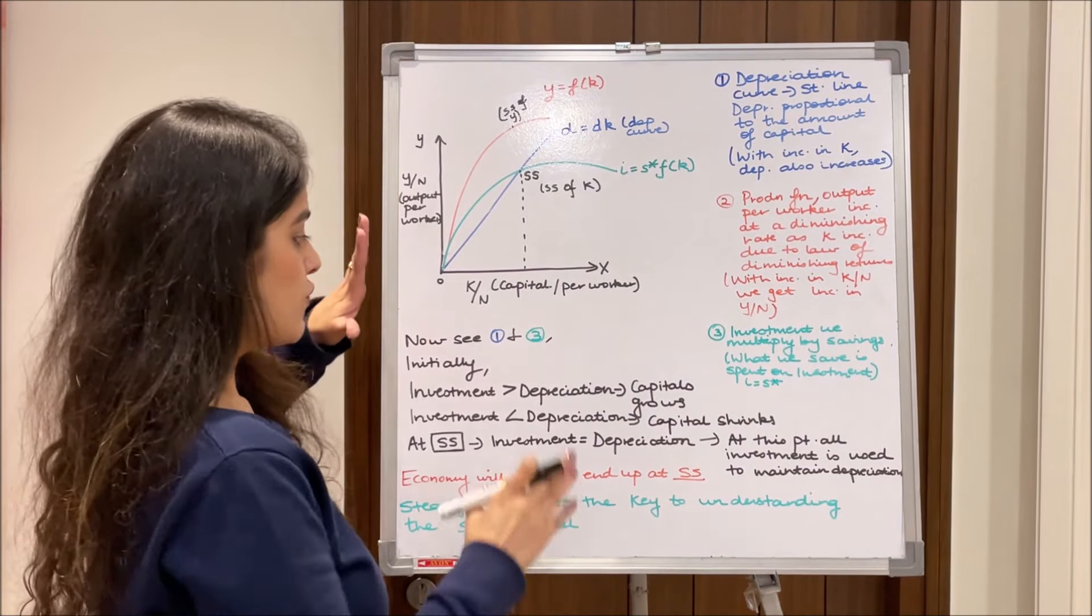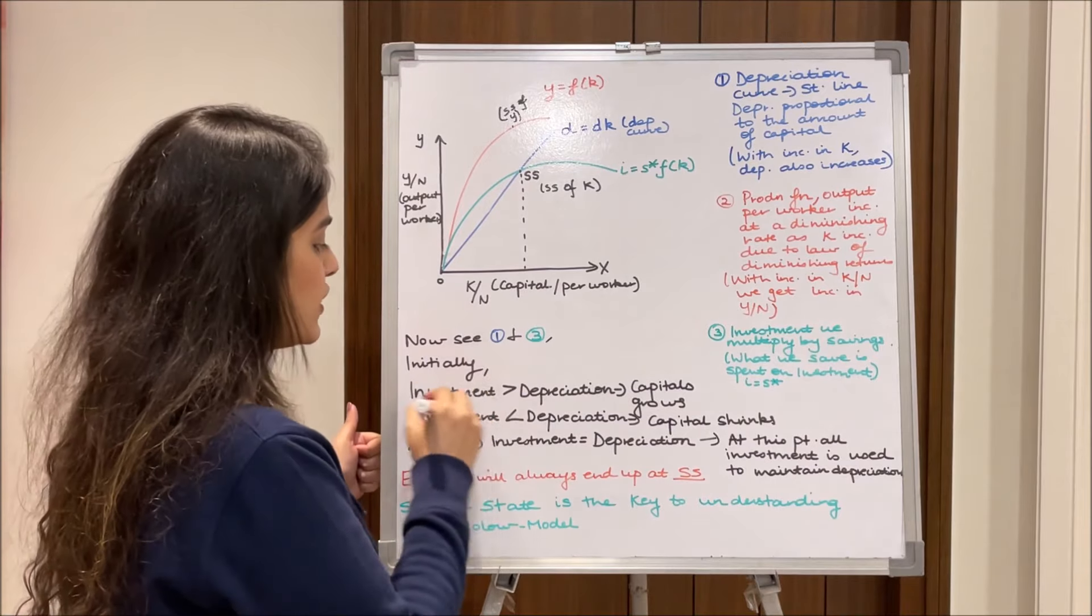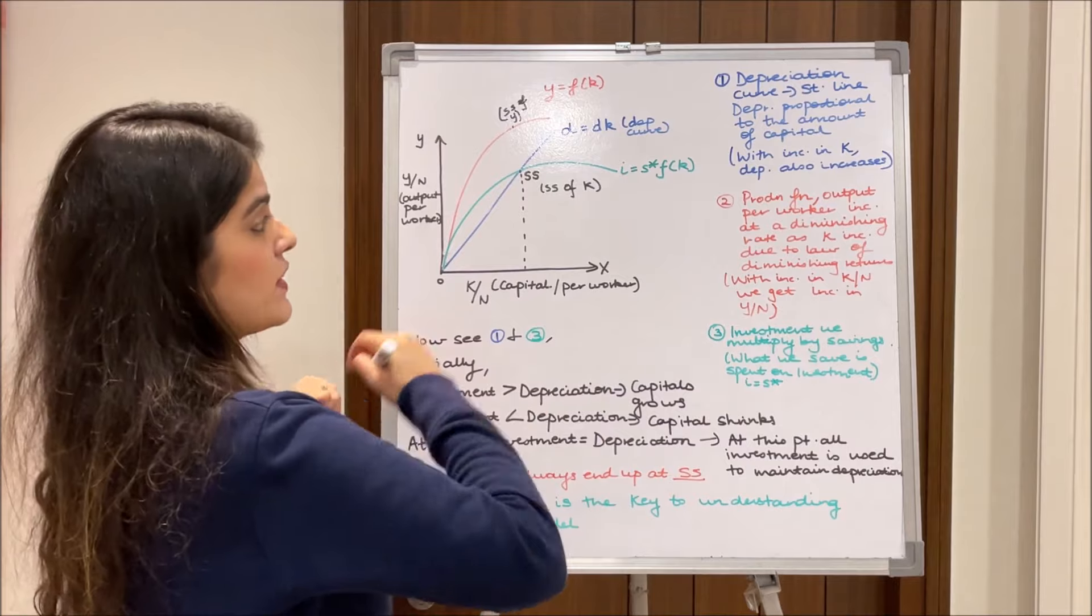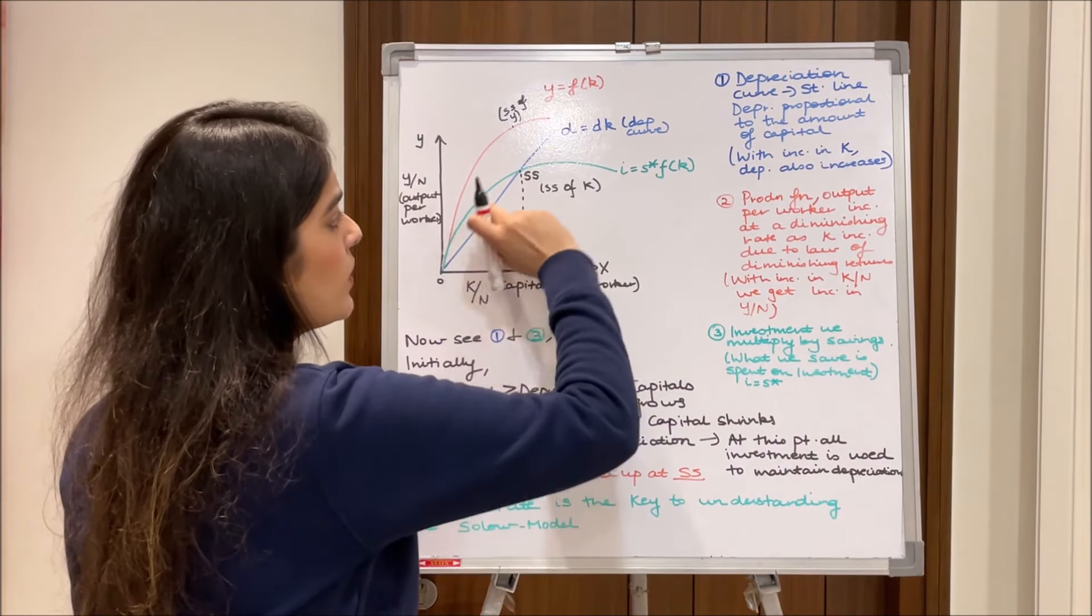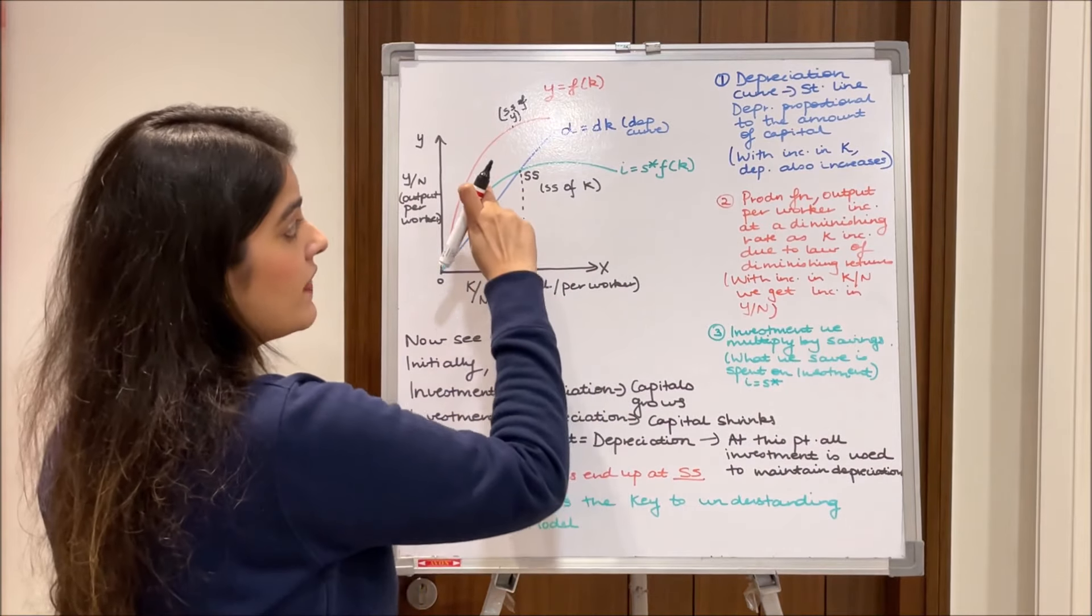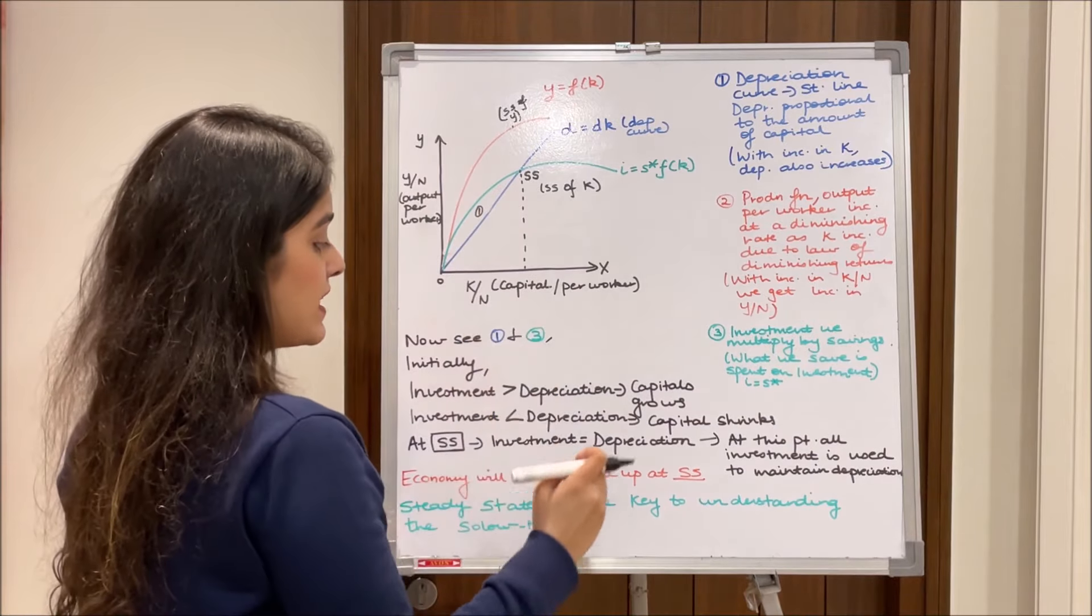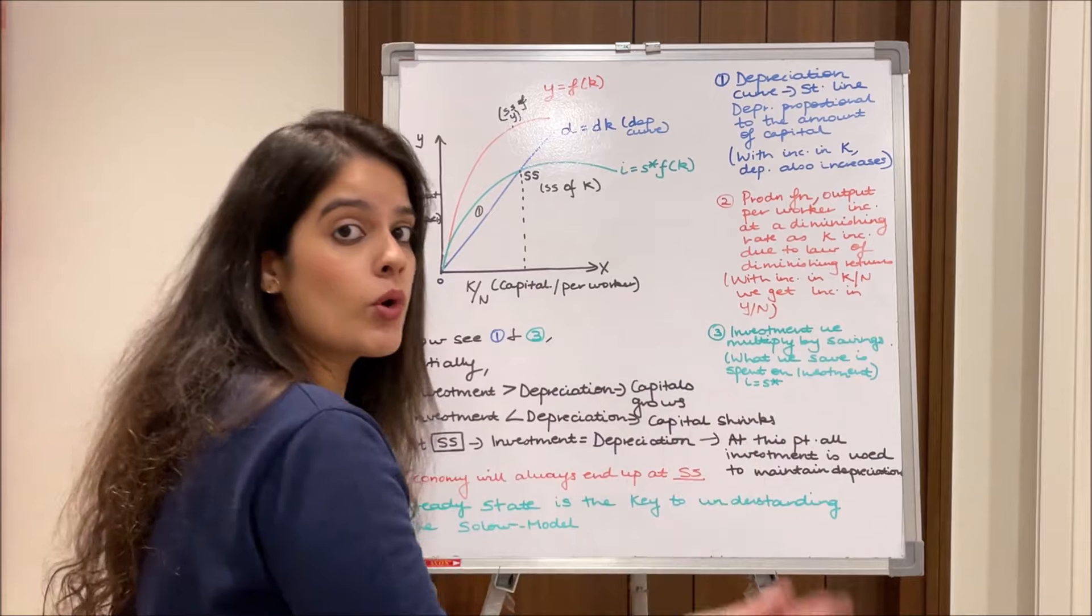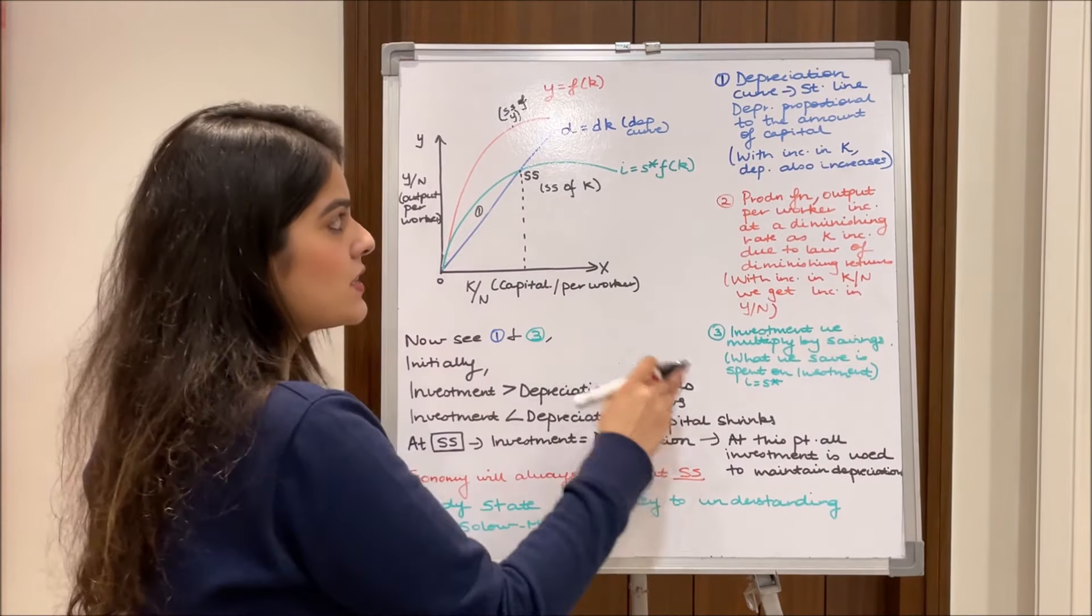Now coming ahead, gather your attention over here. We see initially the investment is greater than depreciation at this point. Now see the blue and the green line specifically. We notice at this point, I'll label it as one, the green line is above the blue line. It means that there is more investment than depreciation, it means that capital is growing.